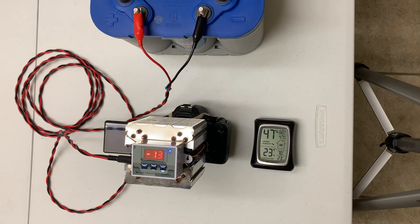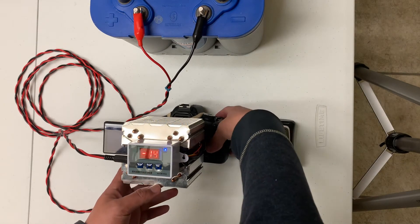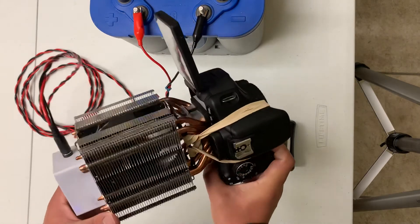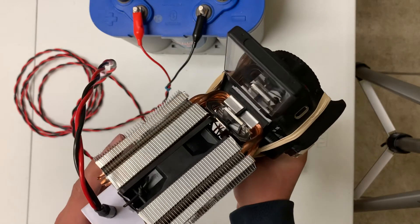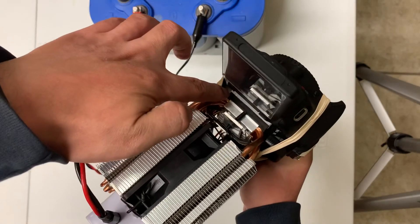And the system doesn't vibrate at all. And now it's getting close to its equilibrium point, which is about 37 degrees beneath the ice point. Let's have a look at it. Let's check the cooling plate. We can see it's getting white. Some frost is building on the cooling plate.